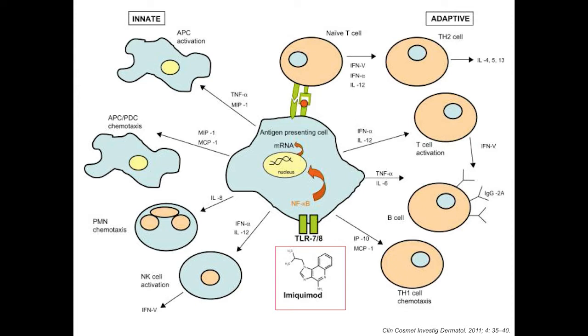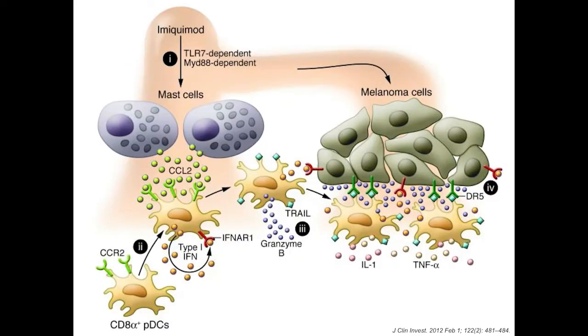Besides activating antigen-presenting cells, many TLR agonists can also activate other immune cells and even non-immune epithelial cells in the context of tumorigenesis. For example, imiquimod can activate mast cells, and by release of a chemokine, engage plasmacytoid dendritic cells to come to the site of melanoma for direct effector function and to engage the T-cell response.